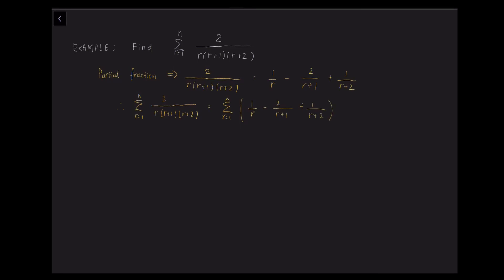Substituting r equals 1: 1 over 1 minus 2 over 2 plus 1 over 3. Then r equals 2: plus 1 over 2 minus 2 over 3 plus 1 over 4. Then r equals 3: plus 1 over 3 minus 2 over 4 plus 1 over 5, and so on until plus 1 over (n minus 2) minus 2 over (n minus 1) plus 1 over n.